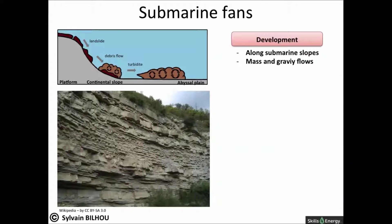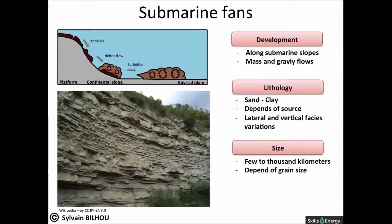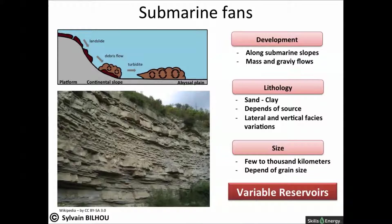Last but not least, submarine fans commonly develop at the base of slope within sedimentary basins. Sand and mud are transported via mass flow, gravity-induced processes from shallow to deep water. Fans can vary dramatically in size, from a few kilometers across to thousands of kilometers. Most of the largest fans tend to be rich in mud and poor in sand, with net-to-gross of 0.1 or less. Even so, because of their large size, areas with higher-than-average sand concentration can be viable reservoirs. Sand-rich fan systems, with net-to-gross commonly higher than 0.6, despite being considerably smaller than their mud-prone counterparts, can themselves be huge.